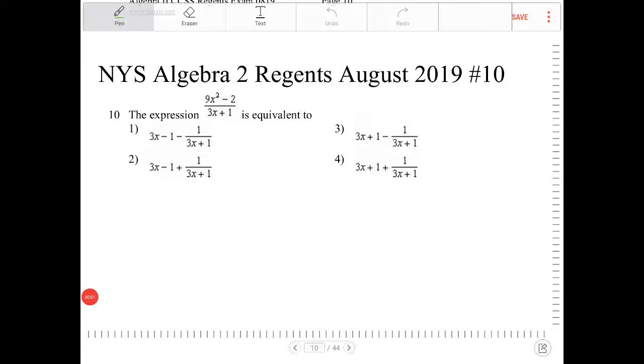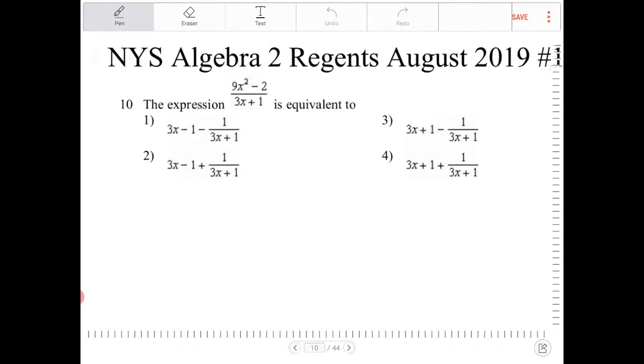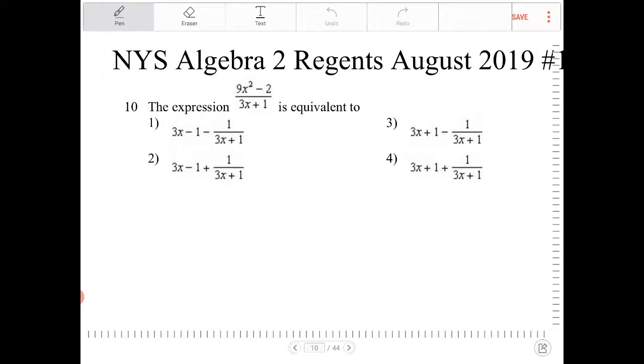The expression 9x squared minus 2 divided by 3x plus 1 is equivalent to... So in order for us to go through this, simplifying this fraction—actually not simplifying, but re-expressing this fraction—what we're going to have to do is perform long division.